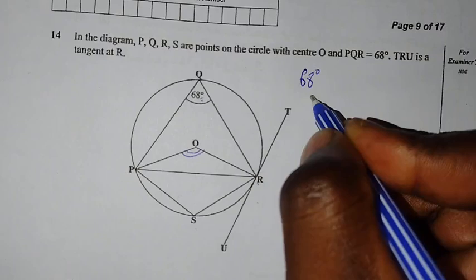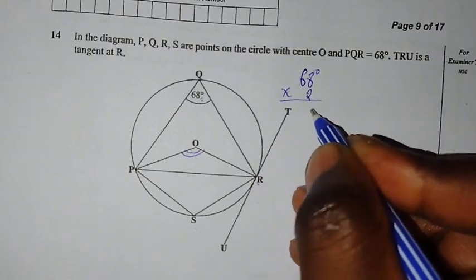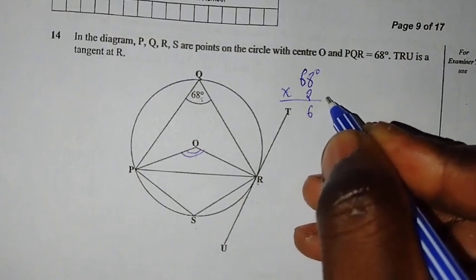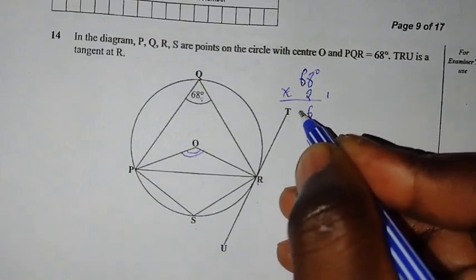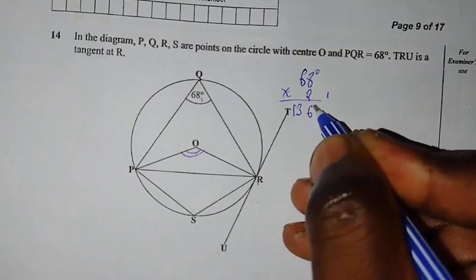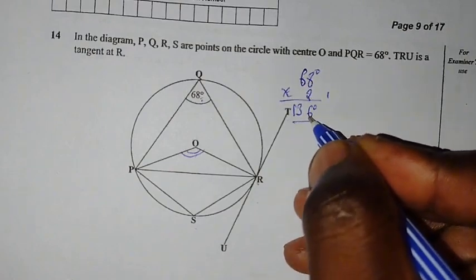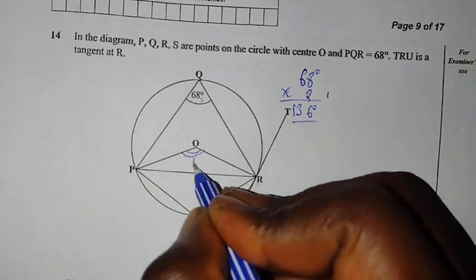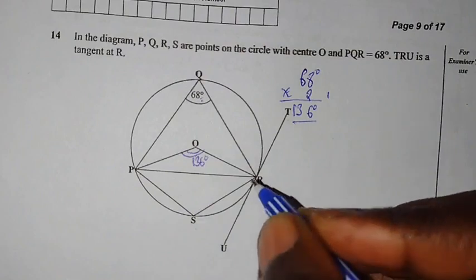We are going to say 68 degrees times 2. So 2 times 8 is 16. You write 6, you carry 1. 2 times 6, 12. Plus 1, 13. So meaning that 68 degrees times 2, to give us 136. So the angle which is right here is 136 degrees.